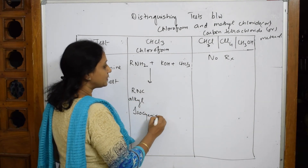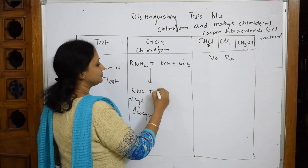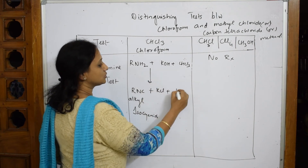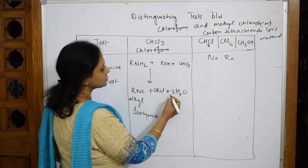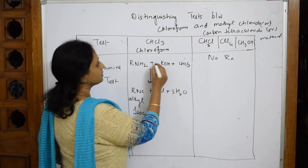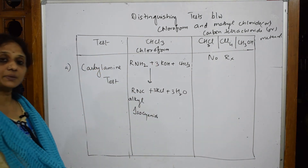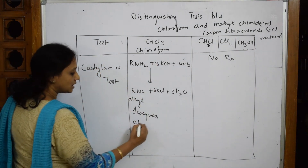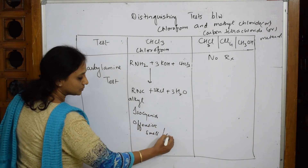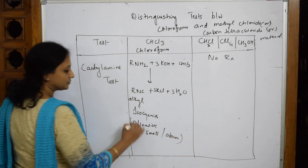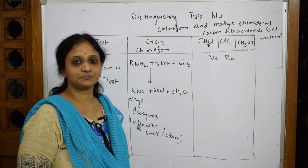Along with alkyl isocyanide, you also get KCl and water. To balance this: three moles of KCl and three moles of water, because there are three chlorines. This is the carbylamine reaction, which produces an offensive smell or odor — that is the important observation. Methyl chloride will not respond to this test.